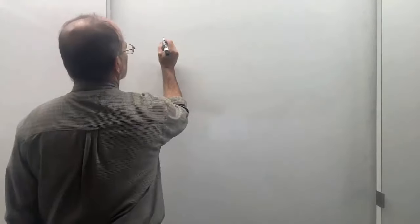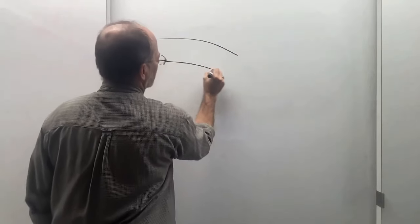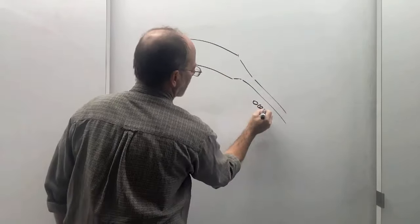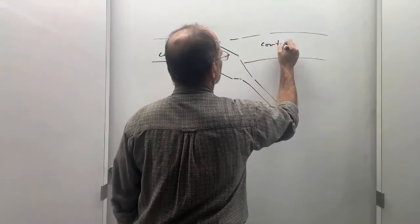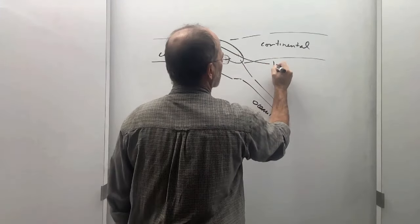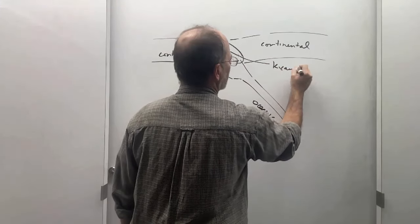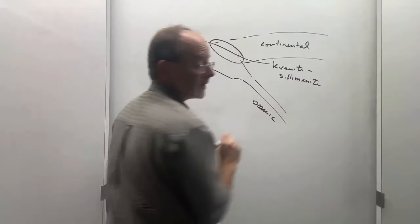And in a continent-continent collision, so let's just draw that kind of like this, continental, here we find kyanite to sillimanite.